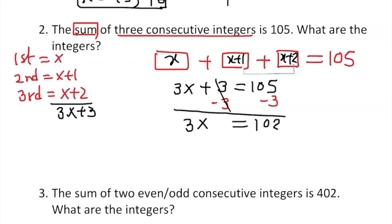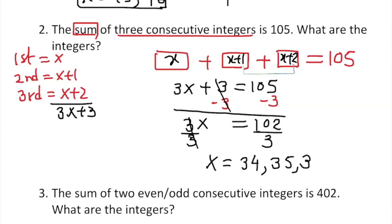Divide by 3 on both sides. x equals 34. So the first number is 34, the next one should be 35, and the following one should be 36. These three should add up to 105.